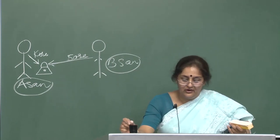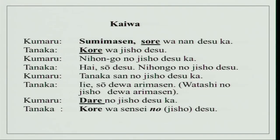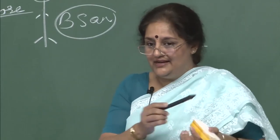Sore wa nan desu ka? Kore wa jisho desu. Nihongo no jisho desu ka? Hai, so desu, nihongo no jisho desu. Tanaka-san no jisho desu ka — does it belong to Mr. Tanaka? Iie, so dewa arimasen. Watashi no dewa arimasen. You can omit watashi no dewa arimasen and give a short answer. Kumar-san again wants to know: dare no jisho desu ka — whose jisho is it? Kore wa sensei no jisho desu. You can also remove jisho — kore wa sensei no desu. No itself completes everything and is very clearly understood.